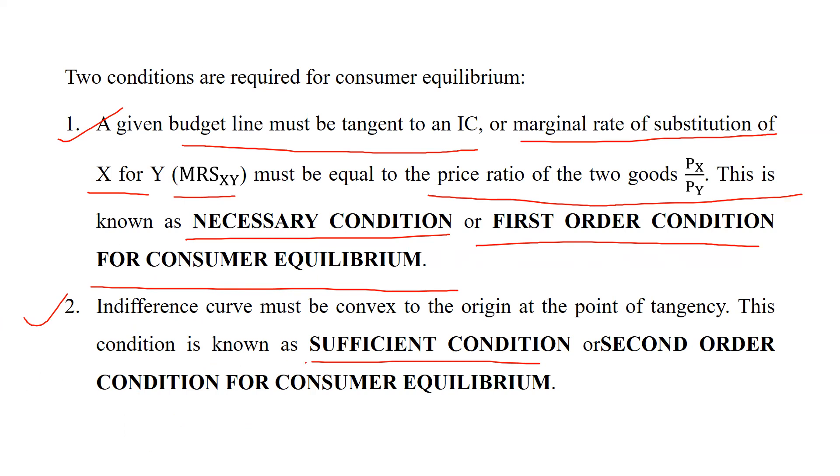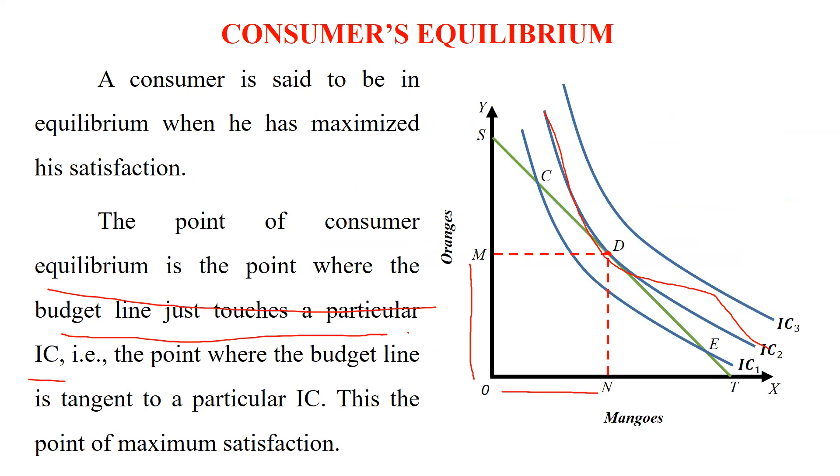So I hope you understand second order condition and first order condition. You can see the curve is convex in nature. And where it is tangent, this is the point where consumer equilibrium is there as well as customer is getting maximum satisfaction.